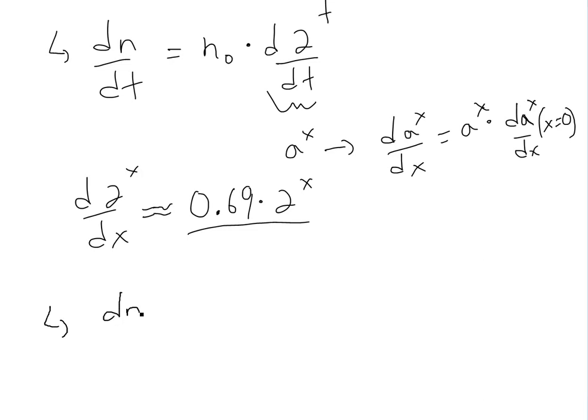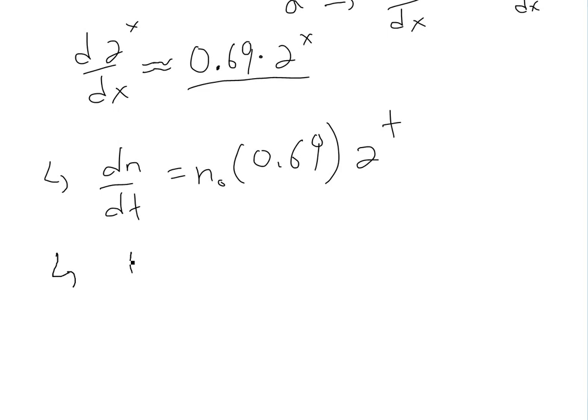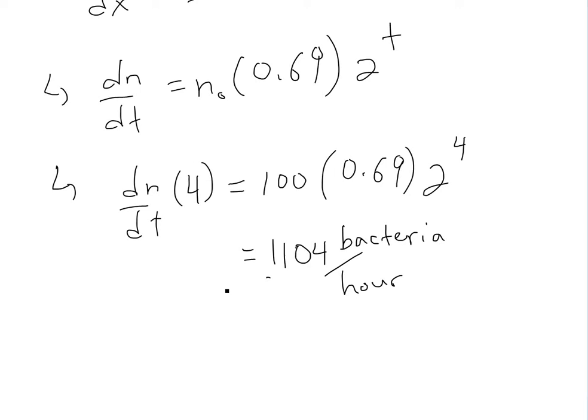So then the population growth rate is dn/dt = n₀ × 0.69 × 2^t. Now we can plug in what we know. This is at t = 4. So dn/dt at t = 4, just put the 4 in. This is going to be n₀ which is 100 times 0.69 times 2^4. Plug this in the calculator, you will get 1,104. This is the number and this is population per hour or bacteria per hour. So this is saying after four hours, the bacteria is growing at a rate of 1,104 bacteria per hour.